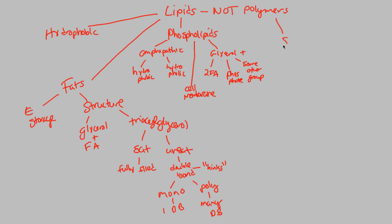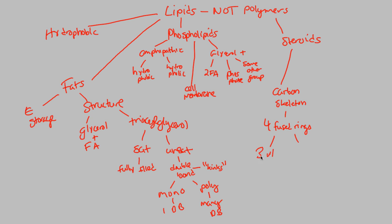The last type of lipid we want to talk about are steroids. Steroids are also a type of lipid and they have a very unique carbon skeleton. The steroid carbon skeleton is actually known as four fused rings. These four fused rings are composed of two different types of rings: three rings with six carbons, and one ring with only five carbons. This is going to promote a specific structure.